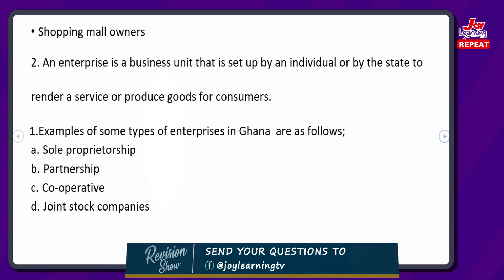Some examples of enterprises in Ghana are as follows, as you can see on the screen: sole proprietorship, partnership, cooperatives, and joint stock companies.